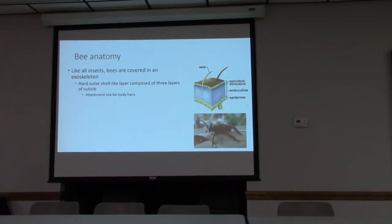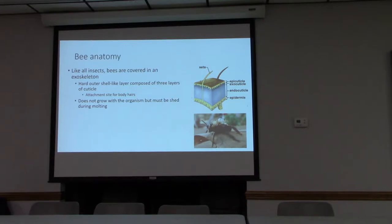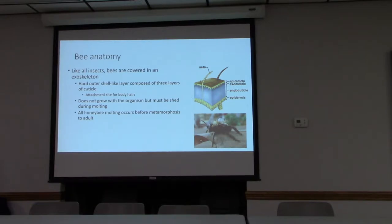The exoskeleton is made up of three layers of cuticle, and this is where the body hairs attach. Most of us never thought that bees have hair, but they do. The outer shell does not grow, so it has to be shed through molting. With honey bees, that takes place inside when they're a pupa in the honeycomb — as they grow in there, they actually shed their exoskeleton.